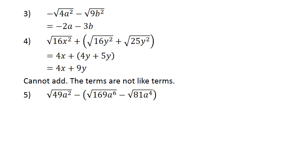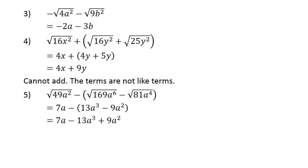Square root of 49a to the power of 2, minus in brackets square root of 169a to the power of 6 minus square root of 81b to the power of 4, close brackets, equals 7a minus in brackets 13a to the power of 3 minus 9a to the power of 2, close brackets, equals 7a minus 13a to the power of 3 plus 9a to the power of 2, equals negative 13a to the power of 3 plus 9a to the power of 2 plus 7a. We always put the highest power first, then the second one, and the A comes last.